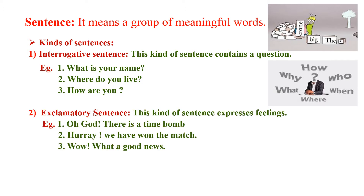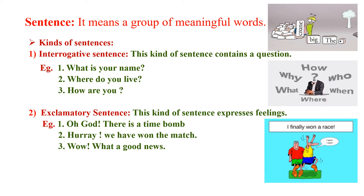The second type of sentence is the exclamatory sentence. This kind of sentence expresses feelings. In this picture you can see that he has won a race and he is saying 'I finally won a race,' expressing his feelings. For example: 'Oh God, there is a time bomb!' 'Hooray, we have won the match!'